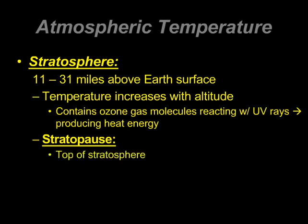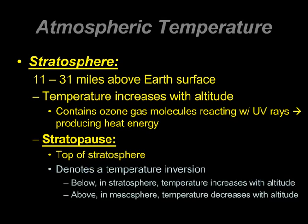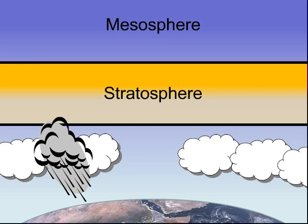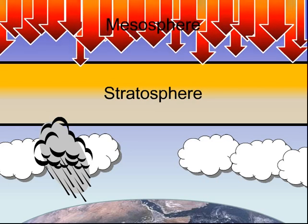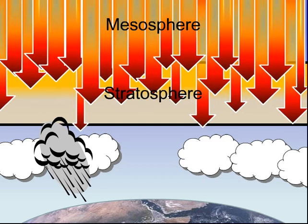At the top of the stratosphere is the stratopause, which denotes a change in temperature — below the stratosphere, temperature increases with altitude, while above the mesosphere, temperature decreases with altitude. The higher temperatures in the stratosphere occur because of a localized concentration of ozone gas molecules. These molecules absorb ultraviolet sunlight, creating heat energy — the same way we saw in the thermosphere. This helps to warm the stratosphere.